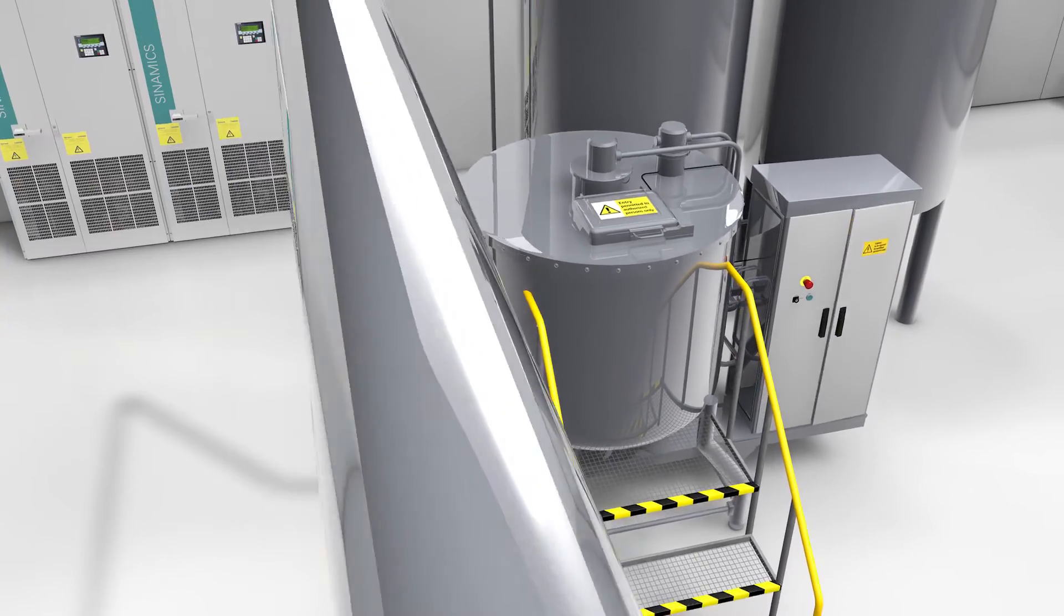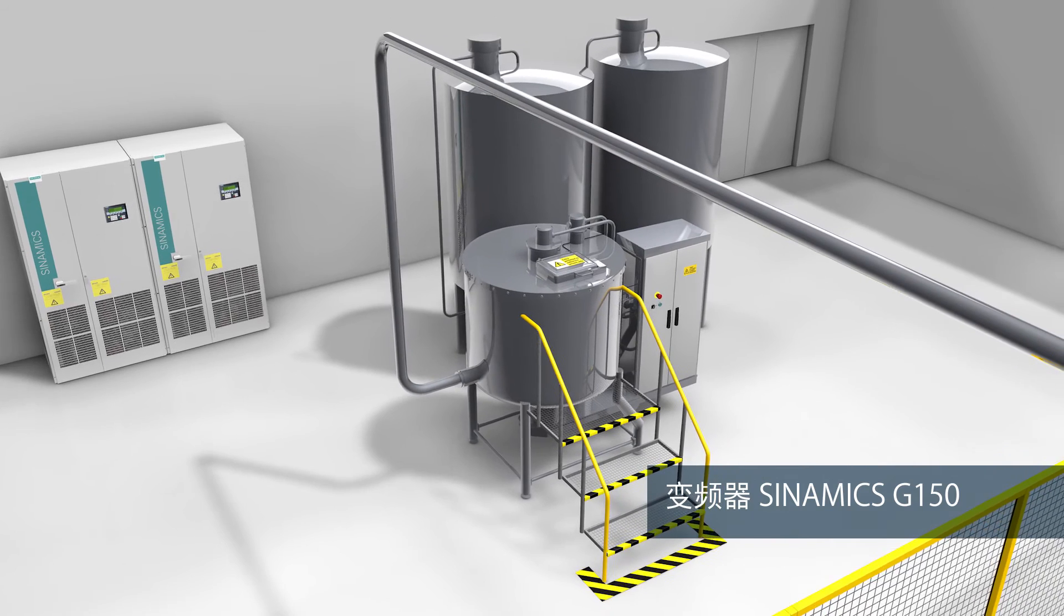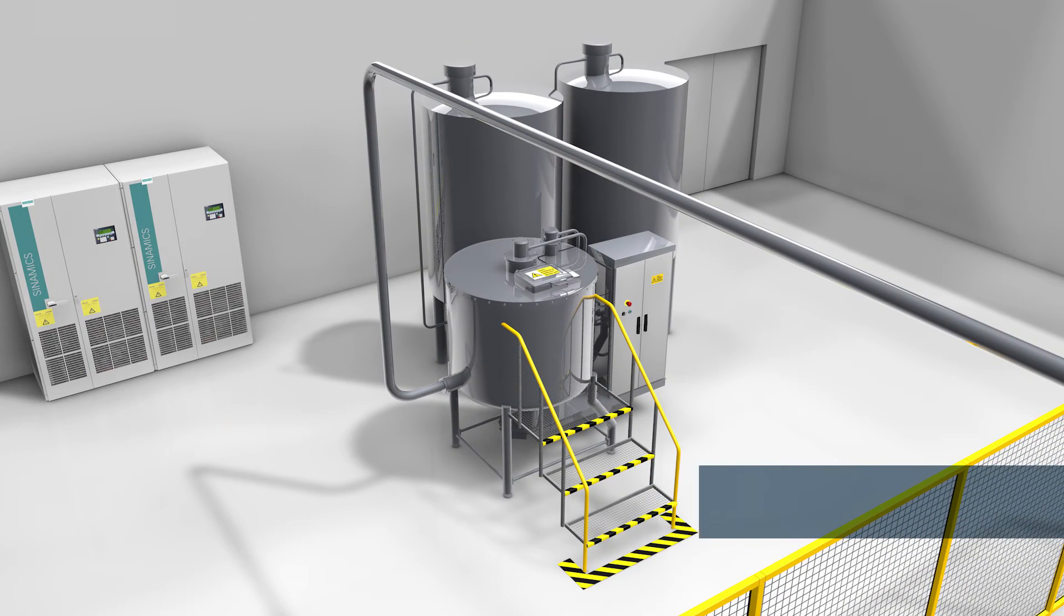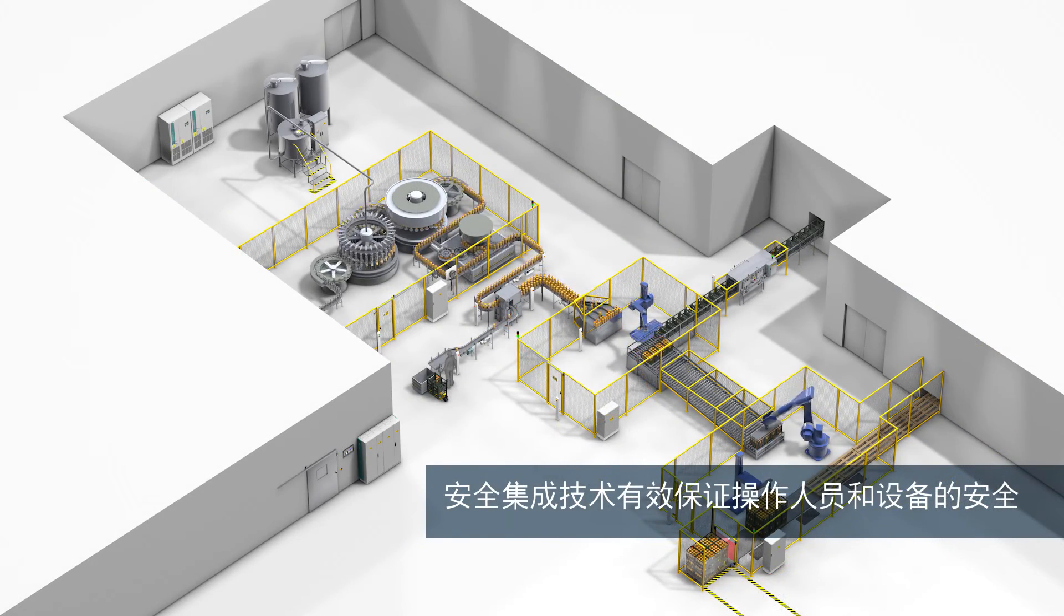The interplay between the Sinamics G150, the speed monitor and the position switch with tumbler protects the machine and ensures maximum safety for your personnel. Safety technology from Siemens protects personnel and machinery safely.